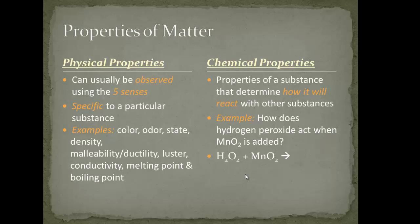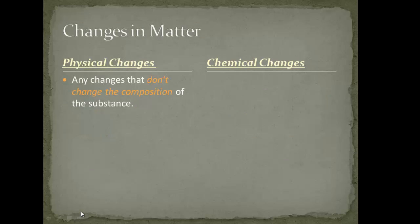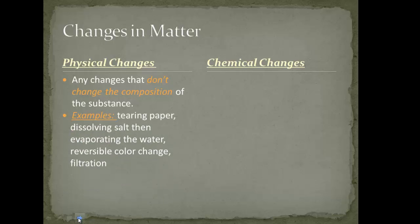Let's look at changes in matter — specifically physical changes, which are any changes that don't change the composition of the substance. You still know that it is that substance; it might have gotten bigger or smaller, but it doesn't rearrange any of the elements that make it up. Examples include tearing paper, dissolving salt when the water evaporates out, reversible color change, and filtration. The substances are still easily identified as themselves.